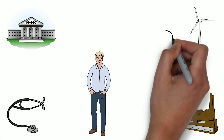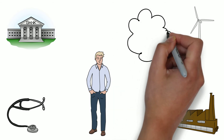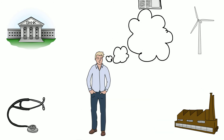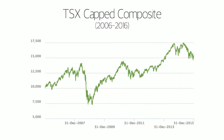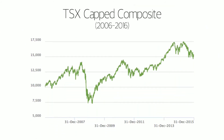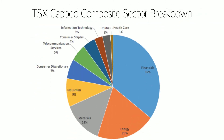If you want to know the sector breakdown of an individual fund, you can easily find it online, typically in the fund's fact sheet. As an example of one such breakdown, let's take the TSX capped composite index,